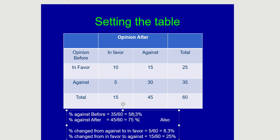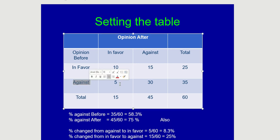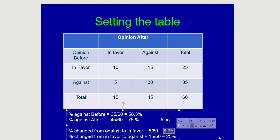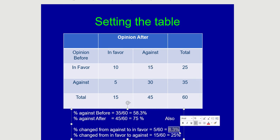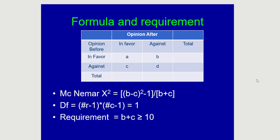We want to know if this change is statistically significant. You can also think about the percentage changing opinions. Those who changed from against to in favor: that's 5 out of 60, so 8.3%. Those who changed from in favor to against: that's 15 out of 60, which is 25%. The question is whether the difference between these two percentages is statistically significant.